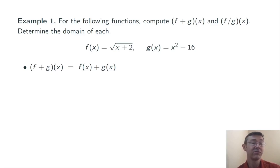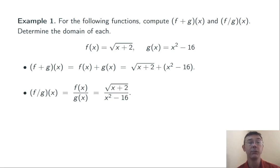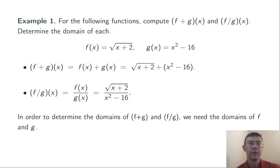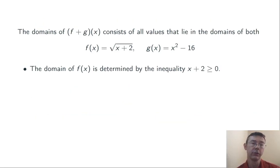So f plus g is defined by f of x plus g of x. I'm literally going to add the formulas for f and g to get the square root of x plus 2 plus x squared minus 16. Similarly, to do f divided by g of x, I'm going to just divide the formulas for f of x and g of x. So writing down these formulas is fairly straightforward. The domains are slightly trickier. In order to get the domains of these two functions, we're going to need the domains of f of x and g of x, the ingredient functions.